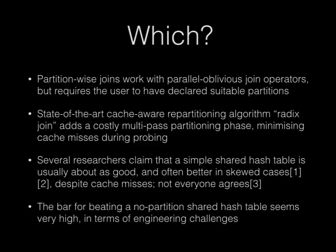Peter asks if it's a trade-off between memory bandwidth and compute bandwidth — absolutely it is. Dynamic repartitioning hash joins are really interesting but extremely complicated. Several researchers have claimed and shown that a simple shared hash table system is usually about as good in many interesting cases, and it can be better in skewed cases. The funny thing about data is that your data is skewed, so researchers working with non-skewed data aren't necessarily capturing common real-world cases. This is quite a hot topic right now.